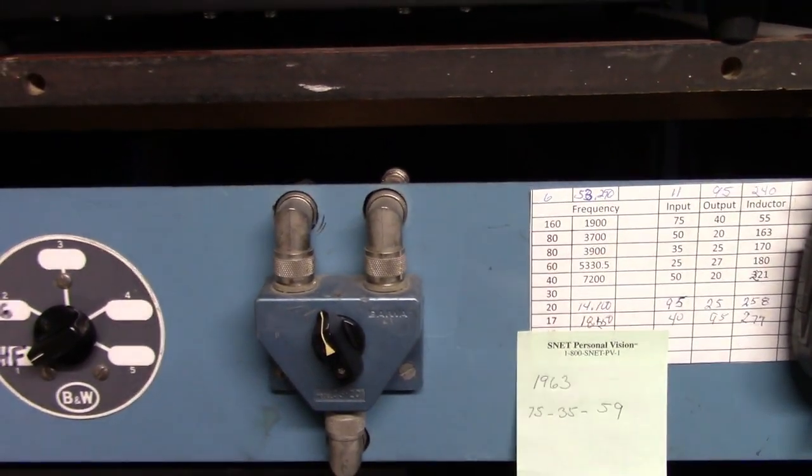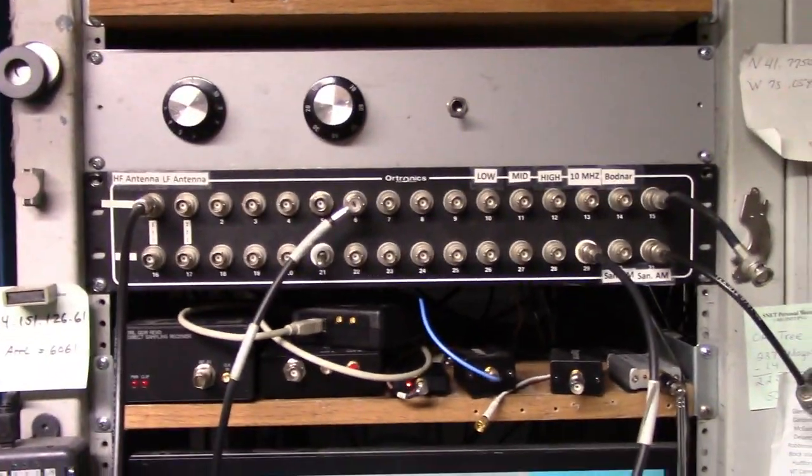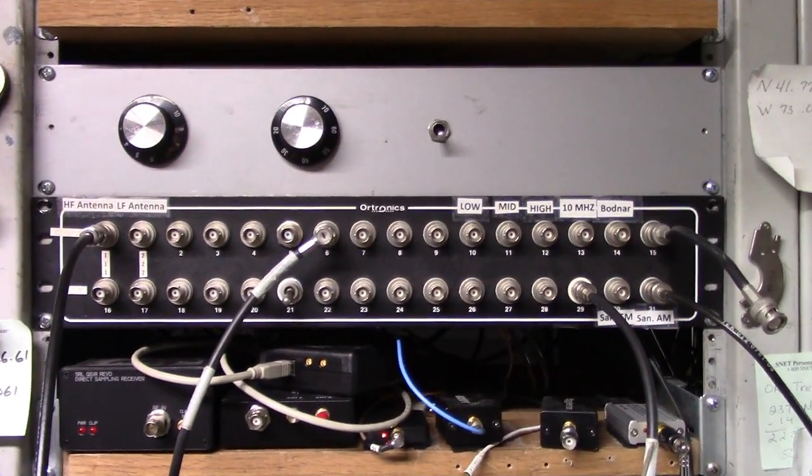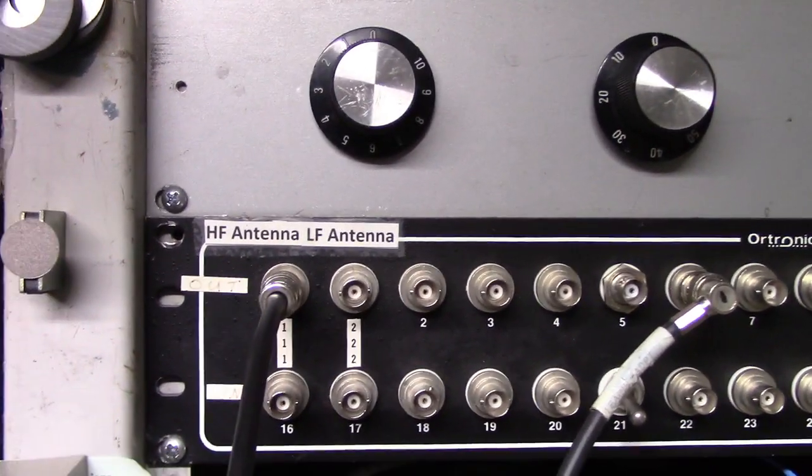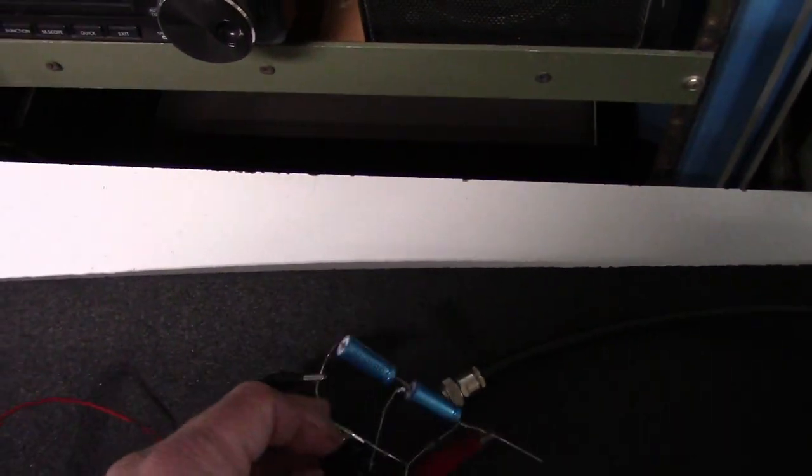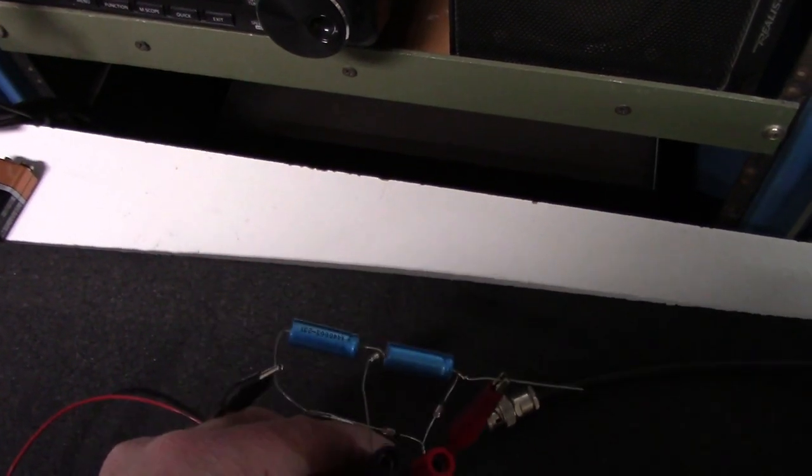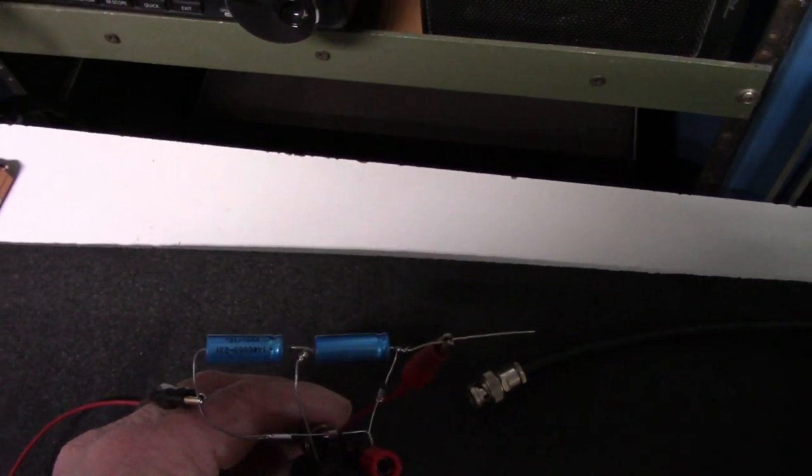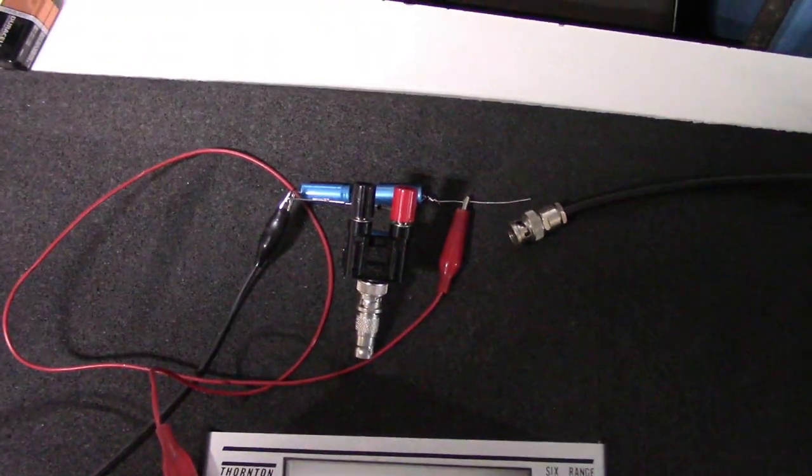Because most of the bands that I use this on is 160, 80, it's never going to be a good match. But that balun is not spec'd down to 600 kilohertz. So I use this tuner, and then it comes to a switch. This side goes to the 7300, and this side goes up to my patch panel.